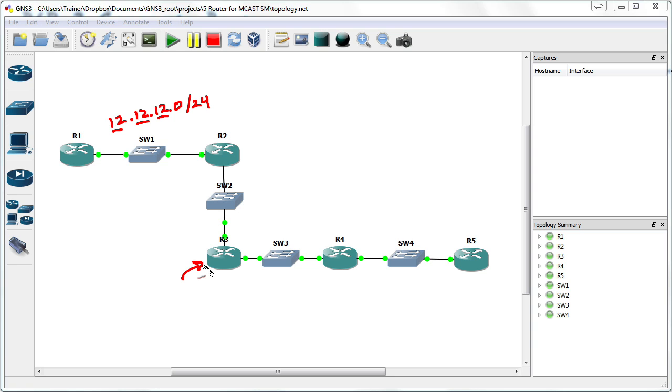Let's take a look at this network as it is learned on R3. What would we expect? This network is advertised to R3 from R2, and this network exists on R2 and moves one hop away. So this network should indicate one hop on R3. This is sent to R4, and we would expect to see a hop count for this network of 12-12-12 on R4 of two.